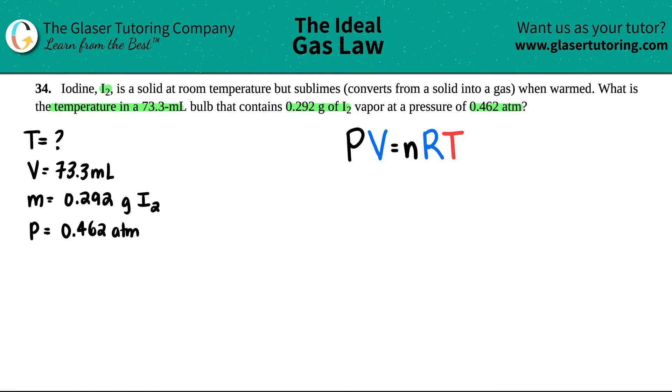But remember, this equation is very, very specific according to its units. So let's just run through the units. Remember, pressure, the P value, has to be an ATM. And thank goodness they give us that, so check.